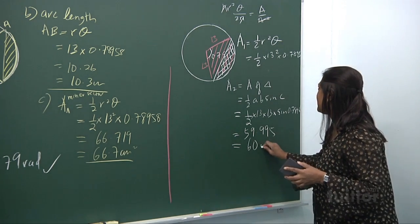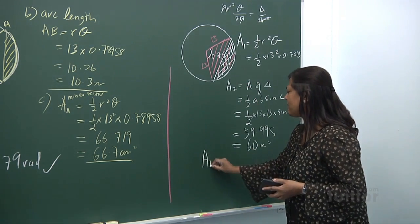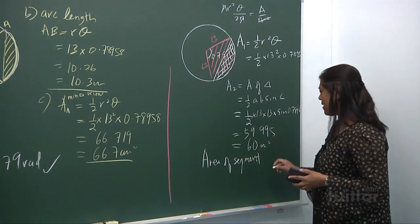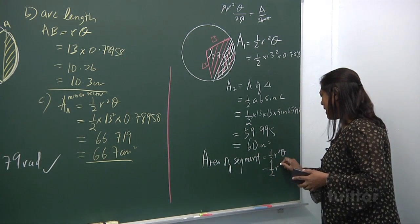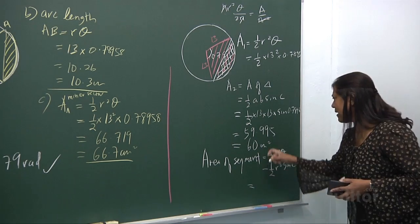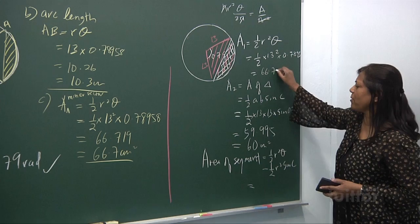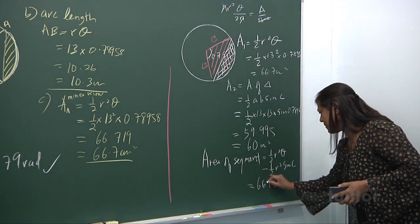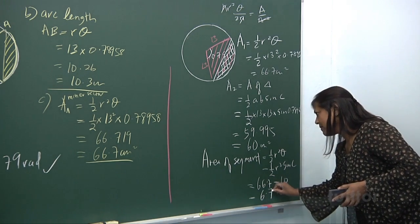Rounded to 3 SF the triangle area is 60 cm². Now the area of the segment equals area of sector minus area of triangle, which is 66.7 minus 60, giving us 6.7 cm².